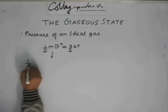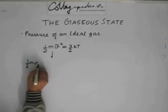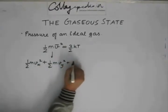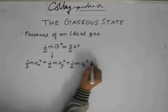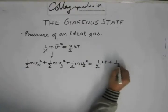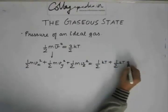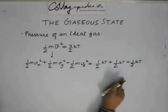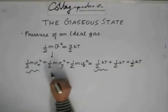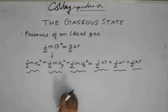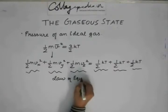This can be expanded into half mVx square plus half mVy square plus half mVz square and this can be expanded to half KT plus half KT plus half KT. We can very well see that if we start comparing each of these terms separately, what we arrive at is back to our original discussion of law of equipartition of energy.